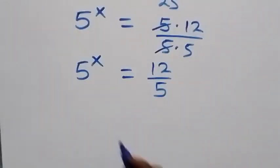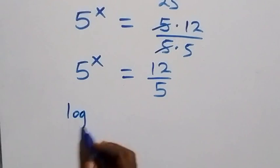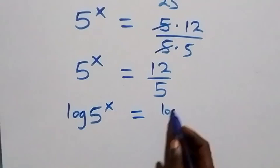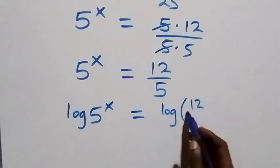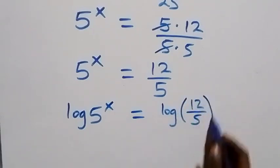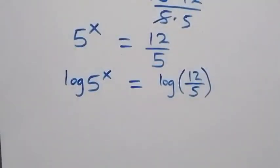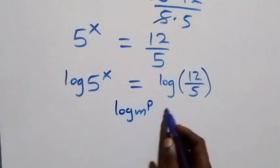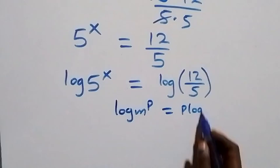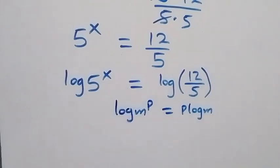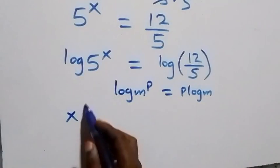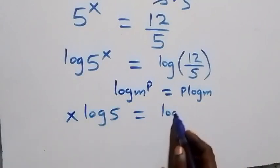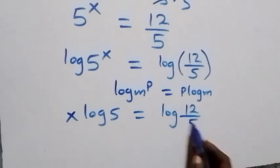In the next step, we take the log of both sides: log of 5 raised to power x equals log of 12 over 5. We apply the power law of logarithms — when we have log m raised to power p, that equals p log m — so this becomes x log 5 equals log 12 over 5.